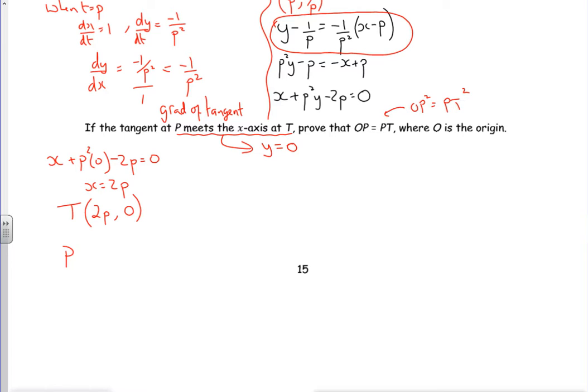I know the coordinates of P, they were p, 1 over p. Now if I'm looking at distances, to prove that OP is equal to PT, now that's a distance, what I can do is show that OP squared is the same as PT squared. I don't need to bother about writing the square roots.